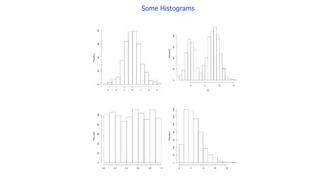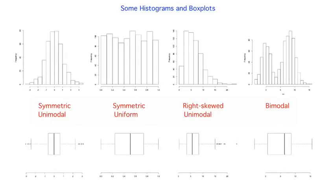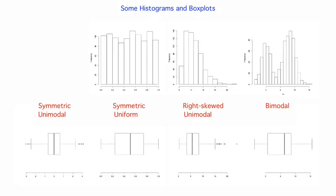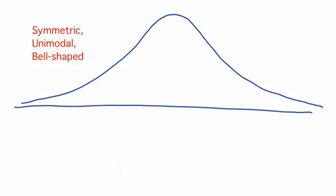Earlier we looked at examples of shapes of distributions that we can see in histograms. For the symmetric and right skewed distributions, we can see the overall features of the shape in both the histogram and in the box plot. For the bimodal distribution, the box plot fails to capture the two peaks, so this is a situation where a histogram can be more useful than a box plot. Unimodal and symmetric distributions of data, with histograms that have roughly a bell shape, are very common and are very important in work that we'll be doing later in the course.